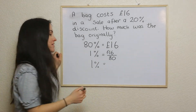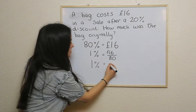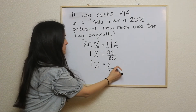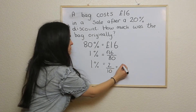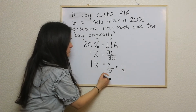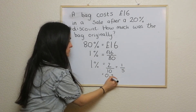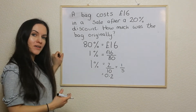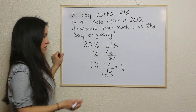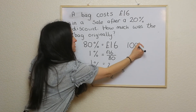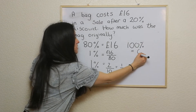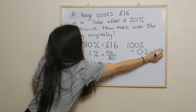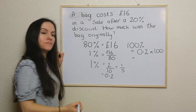Both of these numbers divide by 8, so on the top we get 2 and on the bottom we get 10, which is basically one fifth, or as a decimal 0.2. So 1% is 0.2. If we want to know what the full thing is, we times that by 100, so 100% is 0.2 times 100, which is simply £20.